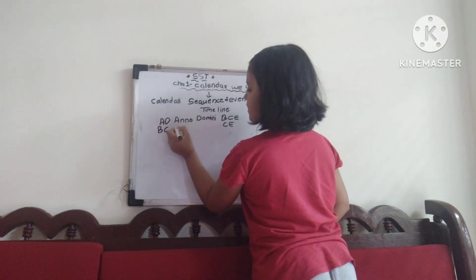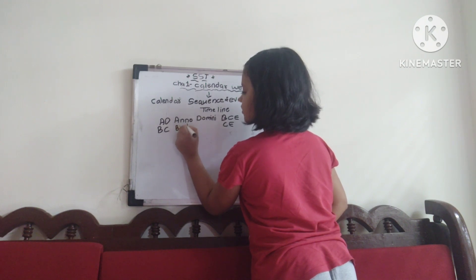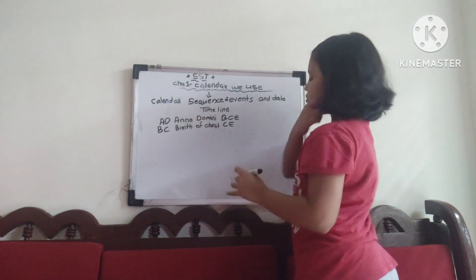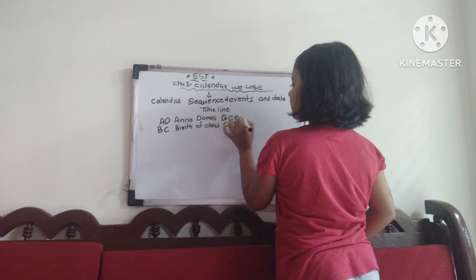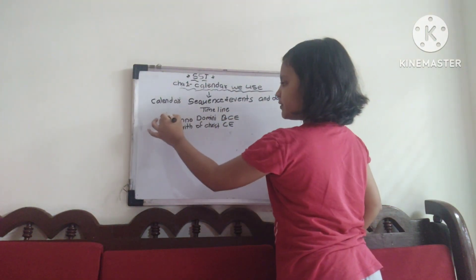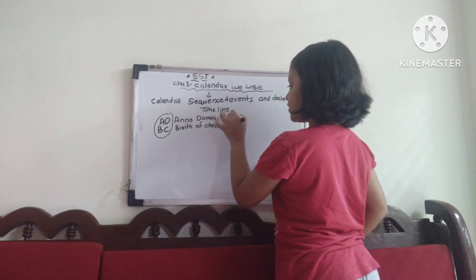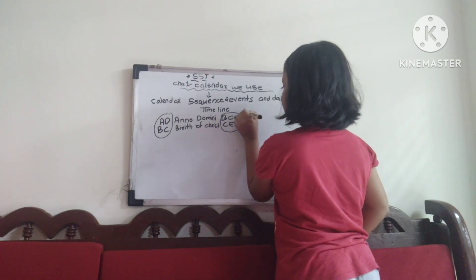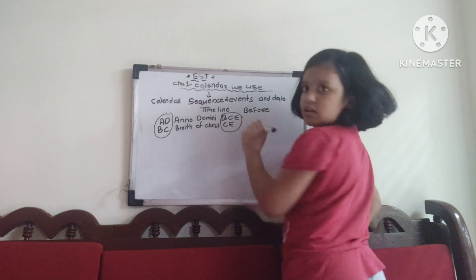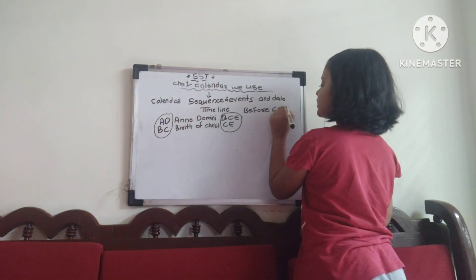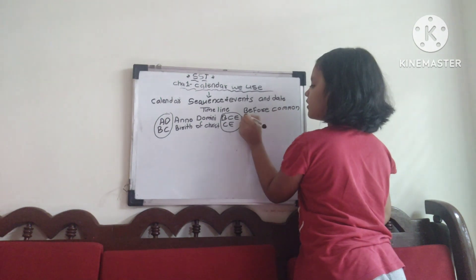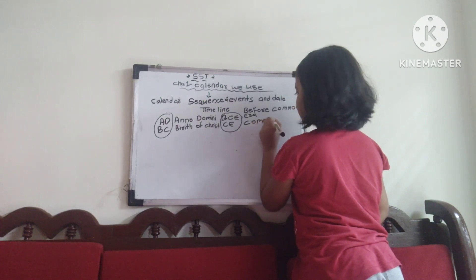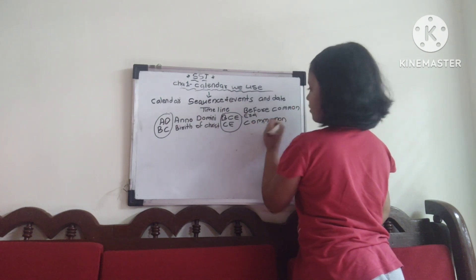BC means before the birth of Christ. We were using AD and BC, but now we are using BCE and CE. BCE means Before Common Era, and CE means Common Era.